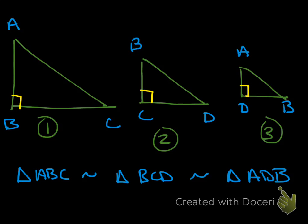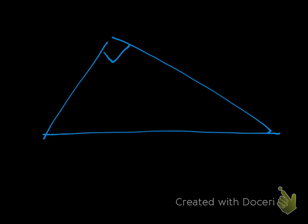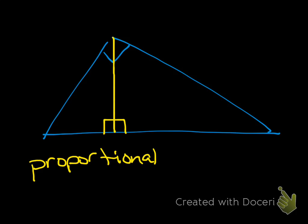Number five asks to complete this conjecture: the altitude to a hypotenuse of a right triangle forms two triangles that are proportional to each other and proportional to the original triangle. So it basically means that you create three similar triangles.